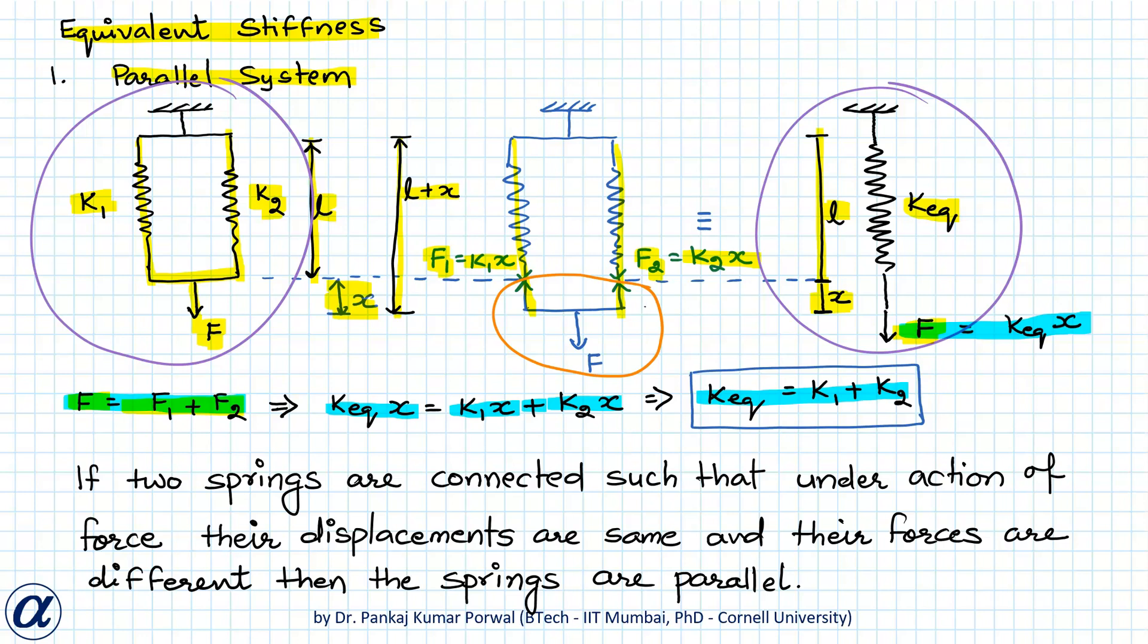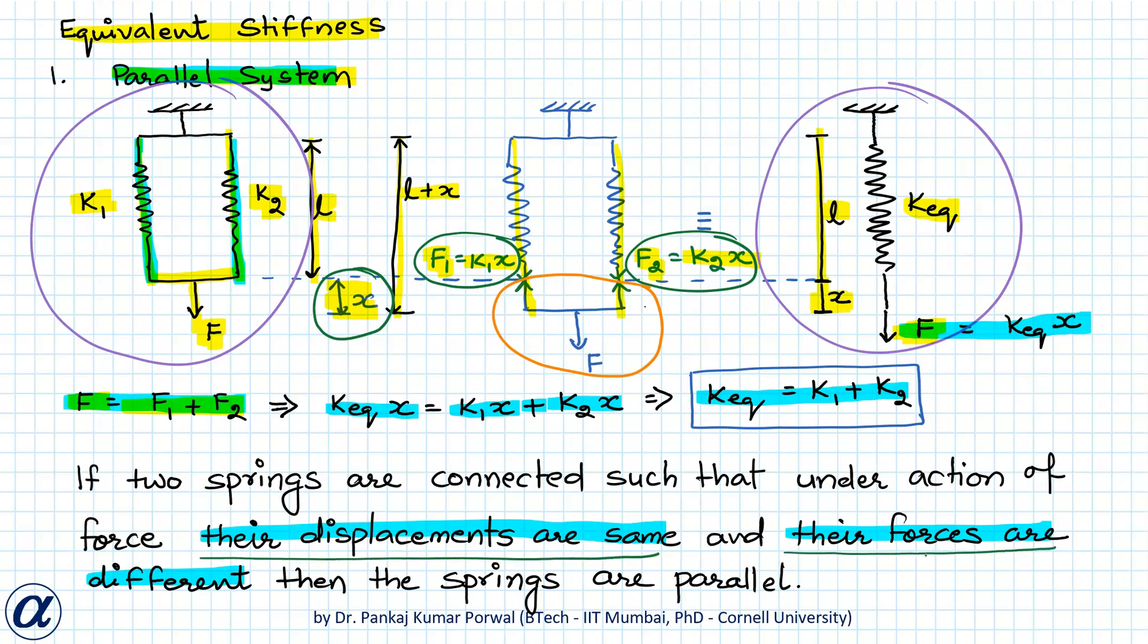Now here note that what makes these springs in parallel is not their parallel placement but the property that their displacements are same and their forces are different. Here note that both the springs undergo same displacement x and their forces F1 and F2 are different. So two springs will be considered in parallel if their displacements are same and their forces are different.